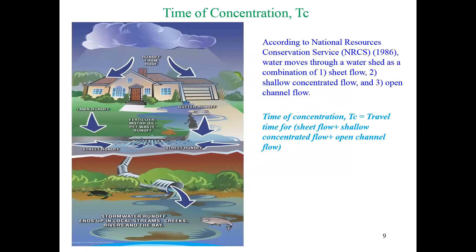The time of concentration is a summation of travel times for three types of flow: sheet flow, shallow concentrated flow, and open channel flow. This is according to the Natural Resources Conservation Service, which proposed that the time of concentration equals the sum of times for these three flow types. We need to understand what each type of flow is.